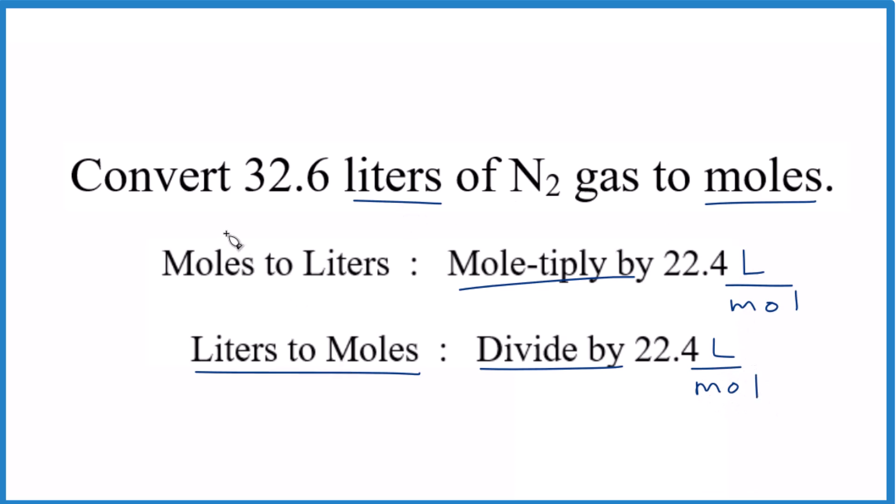This is really useful. When we go from moles to another unit, we multiply. Moles to grams, we multiply by the molar mass. Moles to particles, we multiply by Avogadro's number. That makes this easy to remember. If we're going the other way, to moles, we just do the opposite. We divide.